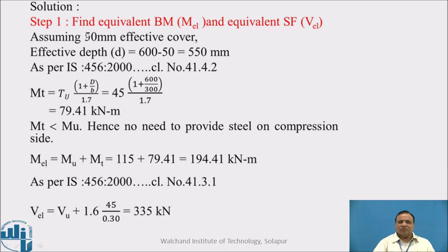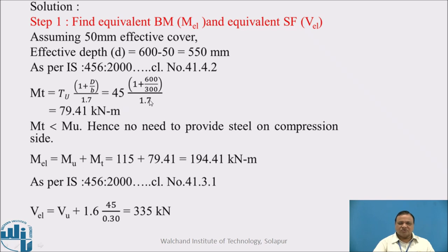Solution. First step: find equivalent bending moment MEL and equivalent shear force as per IS clauses. We assume 50 mm effective cover, so effective depth d is equal to overall depth minus 50 mm, that is 550 mm. As per IS 456-2000 clause 41.4.2, MT is equal to TU into (1 plus D/B) whole divided by 1.7. Substituting the values, we get MT as 79.41 kNm.